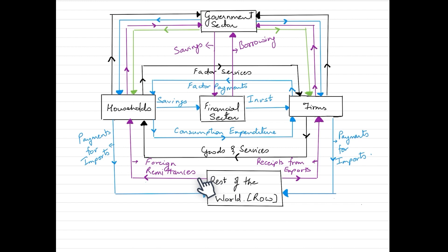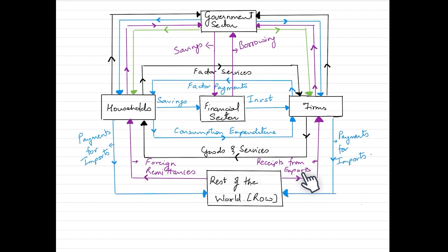Foreign remittances flow from the rest of the world all the way to the households. When we talk about firms, they export goods and services to the rest of the world — to foreign countries or businesses — and get paid for them. This is shown as receipts from exports, a nominal flow in the diagram. The real flow would be the movement of goods and services. That is how the rest of the world interacts with households and firms.